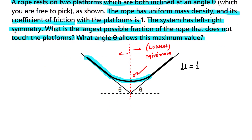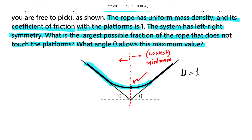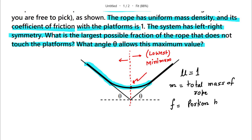The given quantities are: mu equals 1 (coefficient of friction). Let M be the total mass of the rope, and let F be the portion of the rope that is hanging in the air.